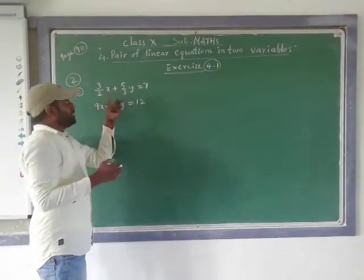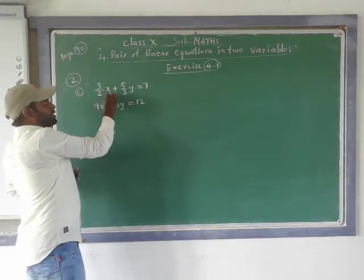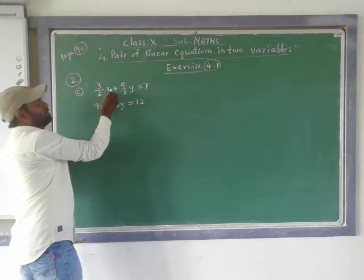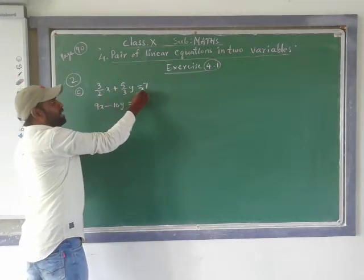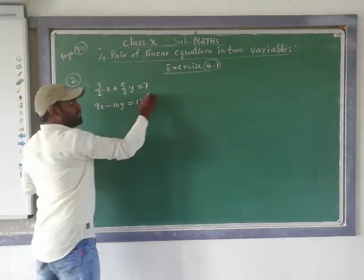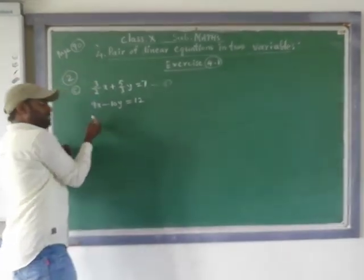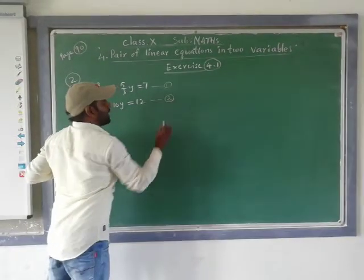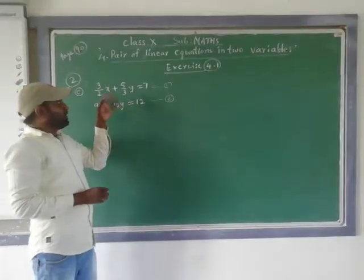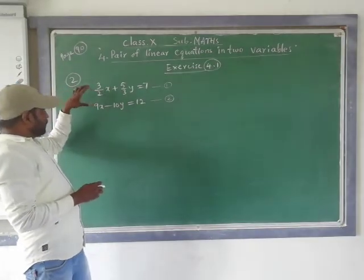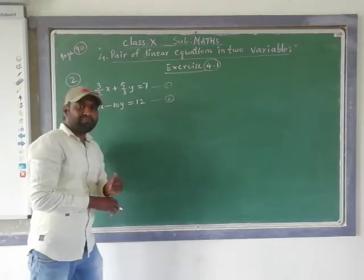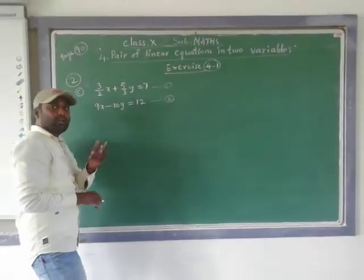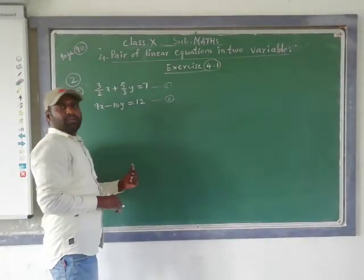For part C, the first equation is 3/2·x + 5/3·y = 7, and the second equation is 9x − 10y = 12. When you try to represent these two equations on the graph paper, they will give you two lines. How those two lines behave is what we are working out here.